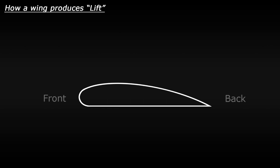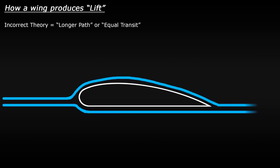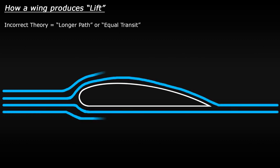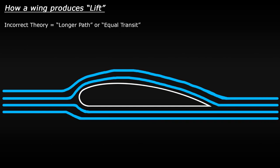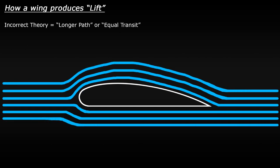One of the most common but incorrect theories which is taught is something called the longer path or equal transit theory, which is based on the Bernoulli principle. The explanation that this theory gives is that the airflow — the air which is hitting the wing — splits as it hits the front of the wing. The air passes over and under the wing and rejoins at the back of the wing at the same time. So for this to happen, the air flowing over the top of the wing has a further distance to cover over the curved surface, therefore it speeds up.